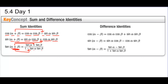The same pattern applies to the difference identities. For cosine, the signs are opposite. For sine, the signs are the same. For tangent, the sign is the same on top and opposite on the bottom, and they use the same pattern.